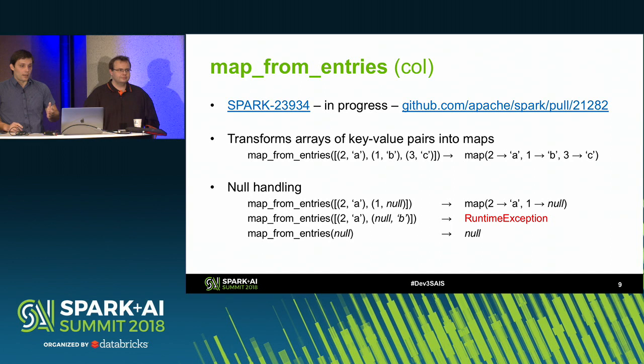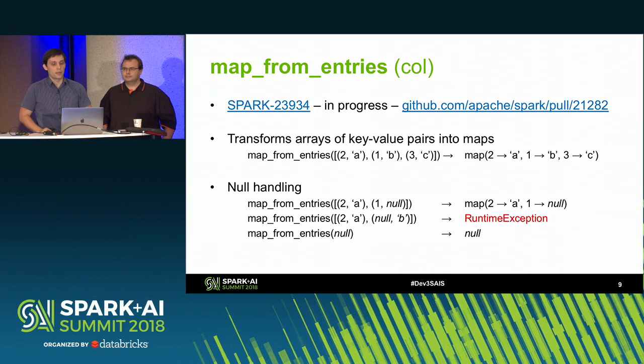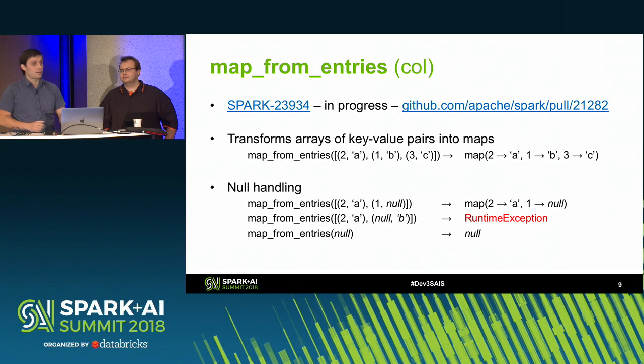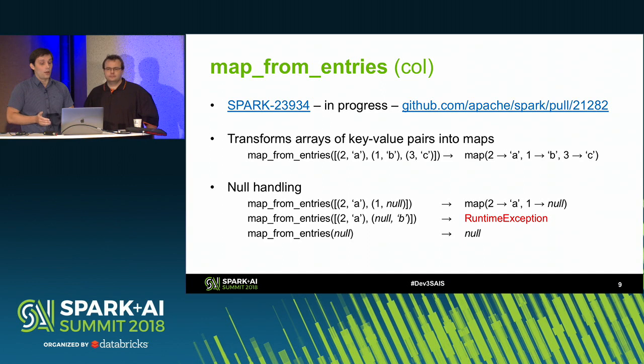The next function, map_from_entries, is the inverse of map_entries. Development of this function is currently in progress, but I'd like to mention it for completeness. It takes an array of entries and returns a map column. One special aspect of null handling: null keys are not allowed. If you construct a data set with null keys, it will throw a runtime exception and stop execution.